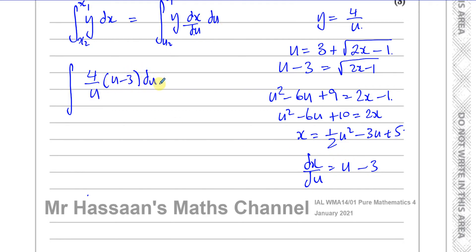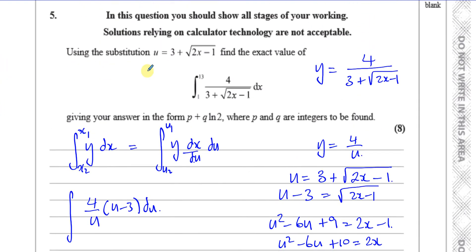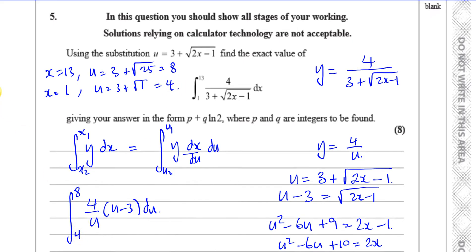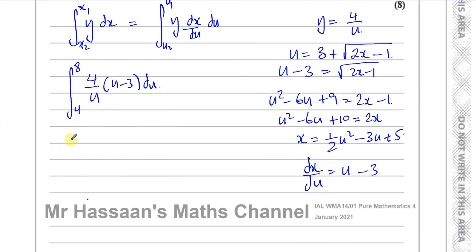So I can now replace dx/du. The dx/du is going to be replaced by u minus 3, then I've got my du at the end. And now what remains is for me to change the limits. I want to change the limits in terms of u. When x equals 13, u is going to be 3 plus the square root of 2 times 13, which is 26 minus 1, which is 25. So that's 3 plus the square root of 25, 3 plus 5, which is 8. And when x equals 1, u is 3 plus the square root of 2 minus 1, which is 1, so it's 3 plus 1, which is 4.